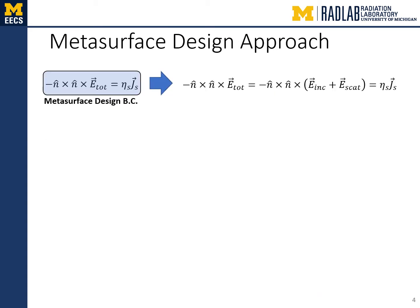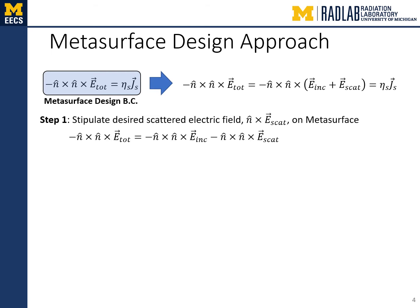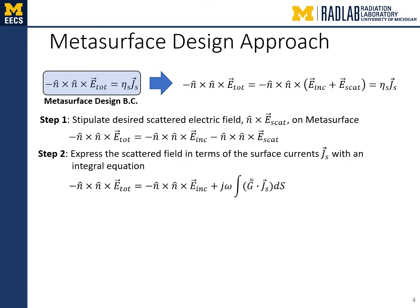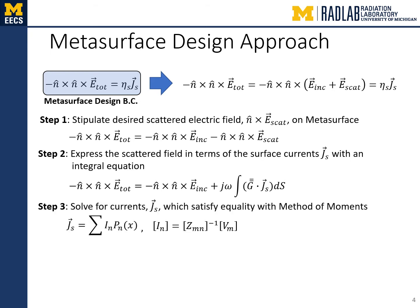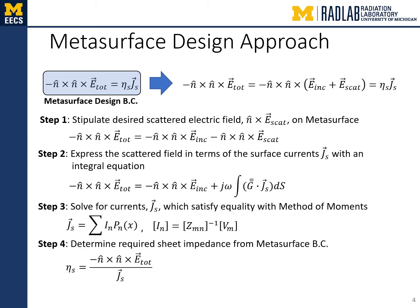We use the metasurface design boundary condition to design the sheet impedances of the stacked metasurface. There are four simple steps to follow: one, we determine the desired total electric field on the metasurface; two, we express the scattered field in terms of the surface currents; three, we solve for the currents using the method of moments; four, we determine the required sheet impedance from the metasurface boundary condition. We will outline these four solution steps in the following slides.